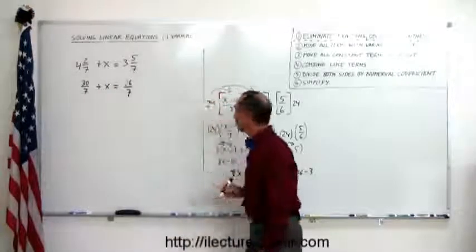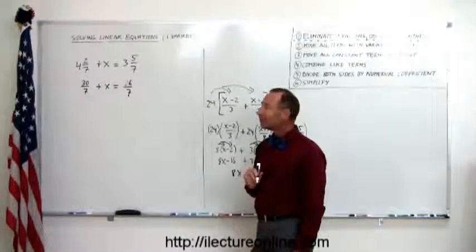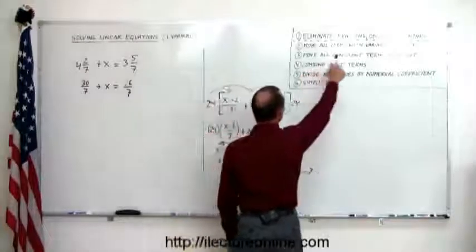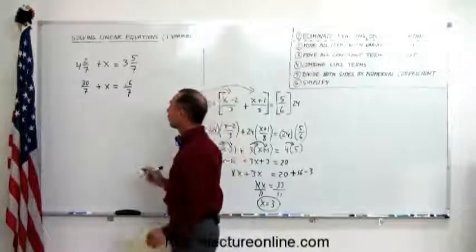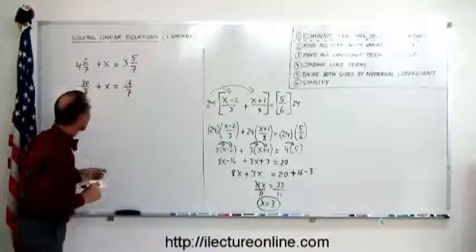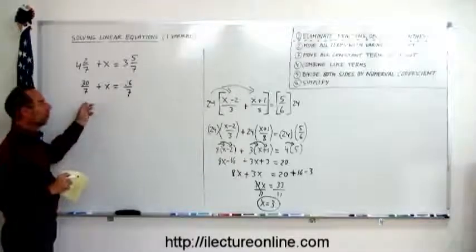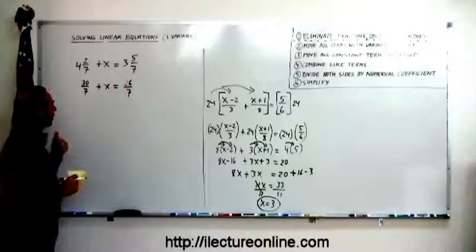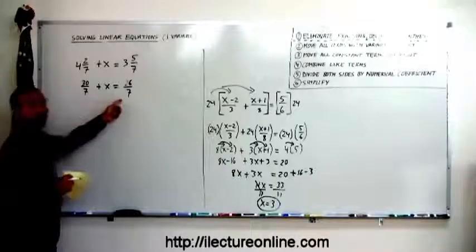And now we have something like we had before, and that's easily solved by following the rules. So the first thing is, get rid of these fractions. Again, what is the rule? We multiply both sides of the equation by the lowest common denominator. Well, the lowest common denominator is 7,